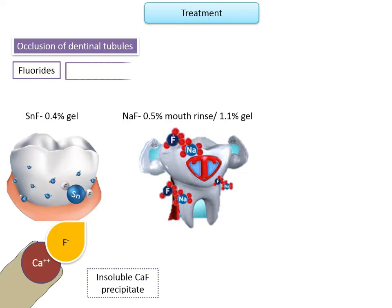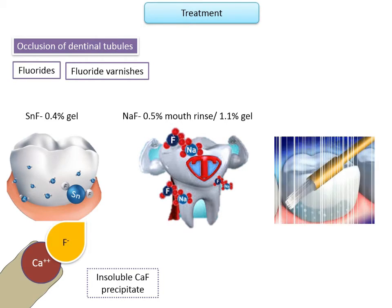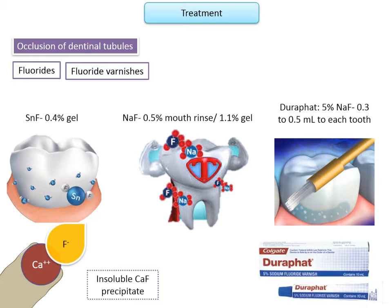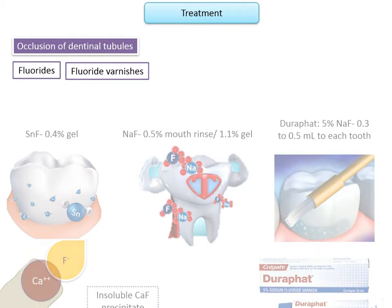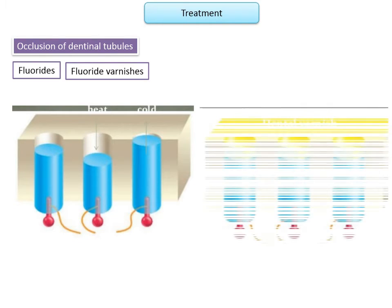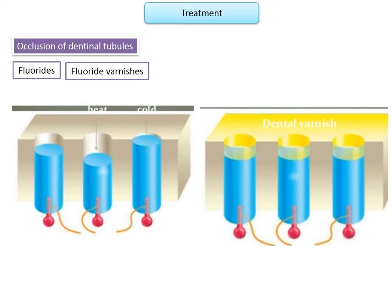Fluoride varnishes: the desensitization effect of fluoride varnishes is transient since the material is abraded soon after placement, hence many applications may be necessary. Durafat is a 5% sodium fluoride varnish applied in-office with a syringe-style applicator at approximately 0.3 to 0.5 ml per tooth; dental floss can draw the varnish into proximal areas. Topical fluorides form a barrier by precipitating calcium fluoride on the exposed dentine surface, reducing dentine permeability and blocking the dentinal tubules to thermal stimuli.